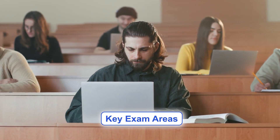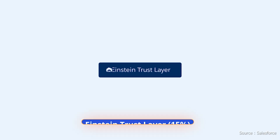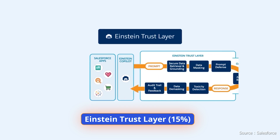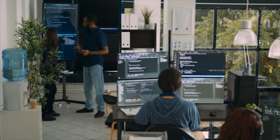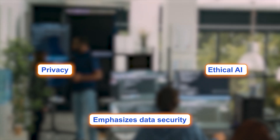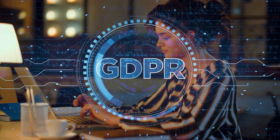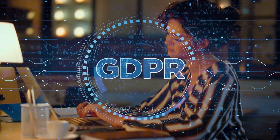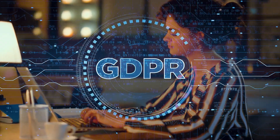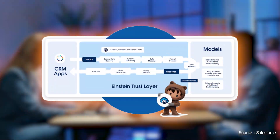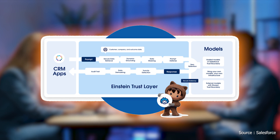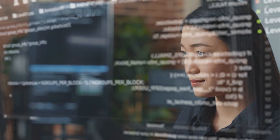Key exam areas. Mastering the Einstein Trust Layer — 15%. This section emphasizes data security, privacy, and ethical AI usage in Salesforce. You'll need to understand how Salesforce complies with privacy regulations such as GDPR and HIPAA. The Einstein Trust Layer ensures transparency and integrity in AI-generated outcomes.